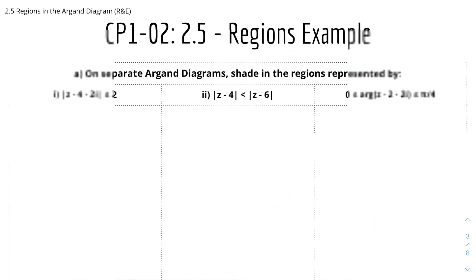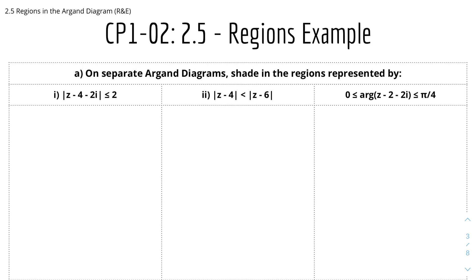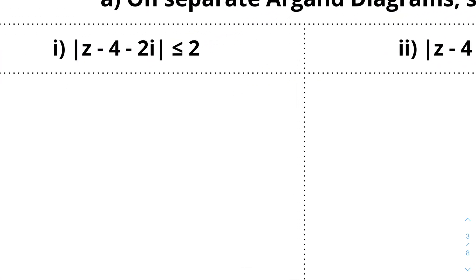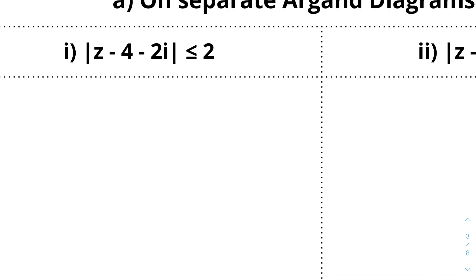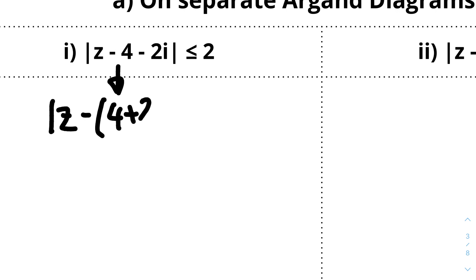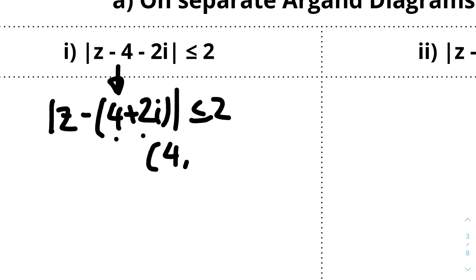So here we have some examples. On separate Argand diagrams, shade the region represented by these three loci. Starting with the first one: |z − 4 − 2i| ≤ 2. We first have to sort out where the center point is — rearranging gives |z − (4 + 2i)|, so the center point is (4, 2) and the radius is 2.